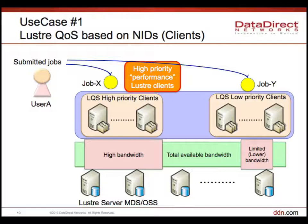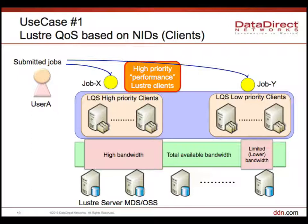Even with the same job and same application, you can see different application speeds. This is the same idea as how we manage CPU and memory resources on compute nodes today. Just as a job scheduler assigns more memory or CPU cores when needed, we want to add Lustre performance as one of the resources of the compute node that can be managed and allocated.